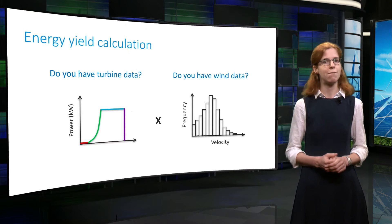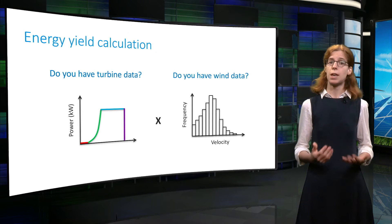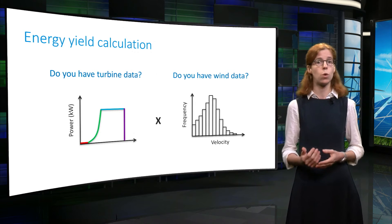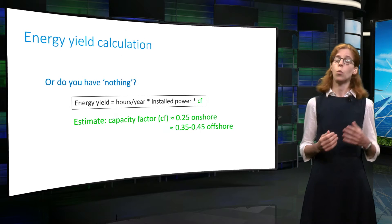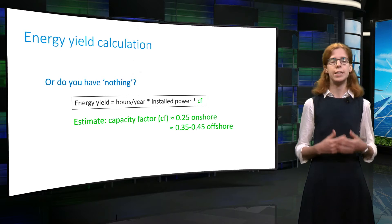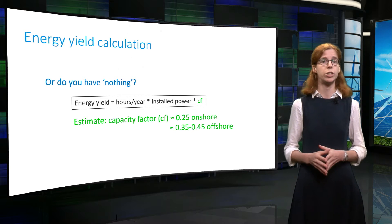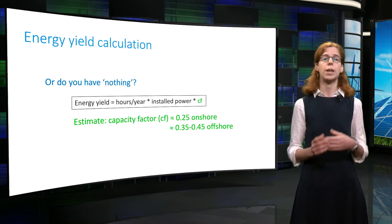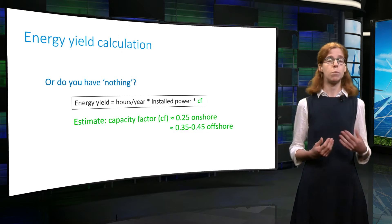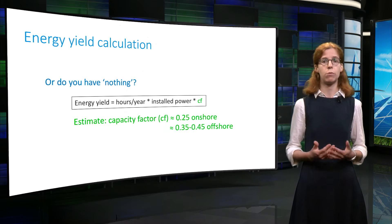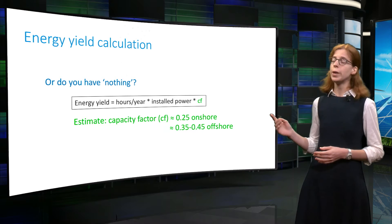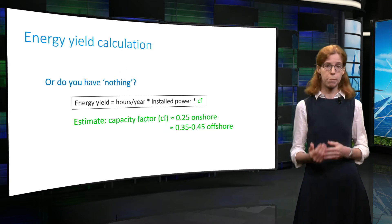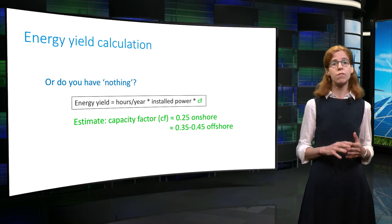But what if we don't have this information? It is indeed sometimes very difficult to get wind speed measurements at the location where we would like to install a wind turbine. Without this information, it is still possible to compute a rough estimate of the energy yield using the capacity factor. Remember that the capacity factor is an indicator of the percentage of time a wind turbine runs at full power. So, knowing the rated power of the turbine, we can multiply this value by the capacity factor to get a rough estimate of the energy yield.